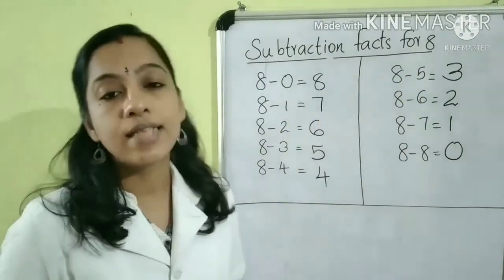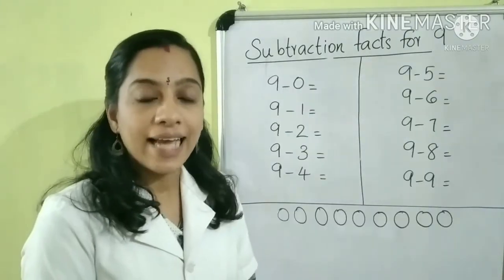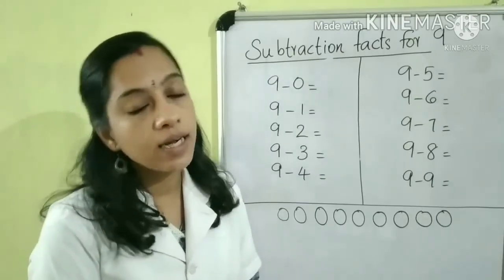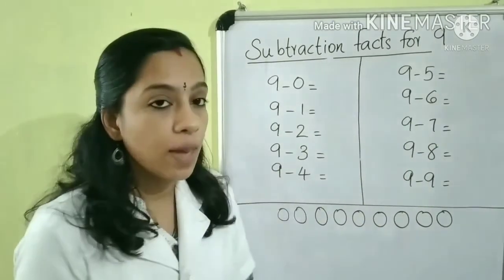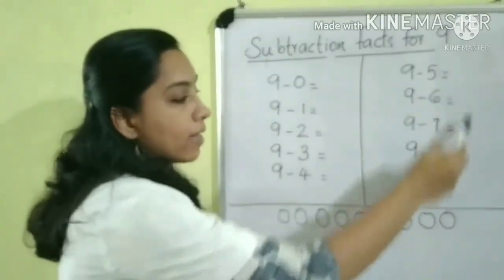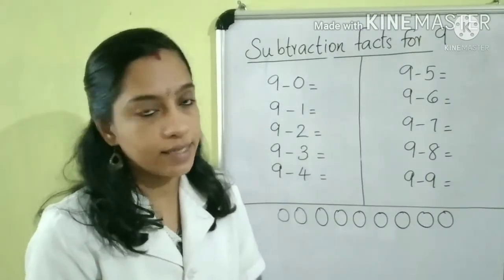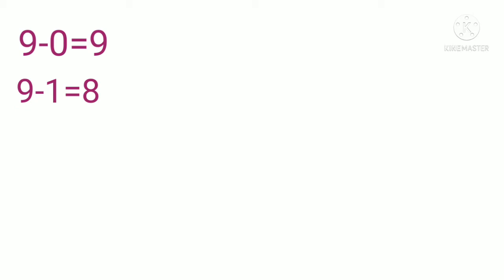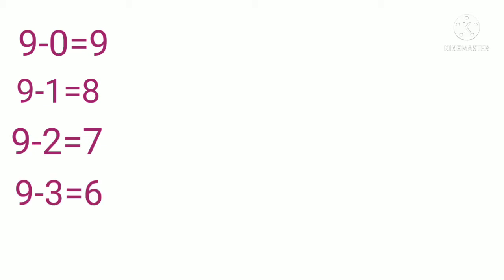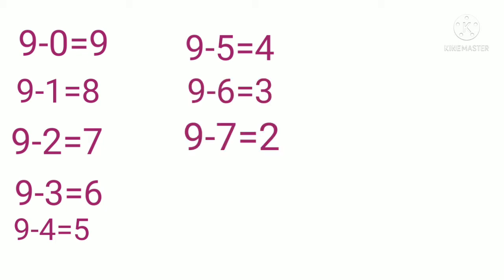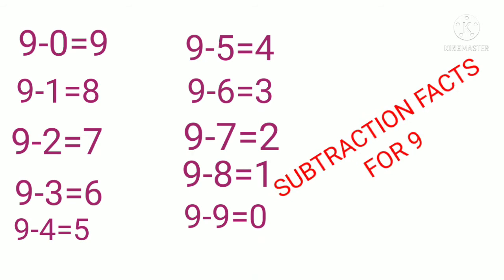The number 8 has 9 subtraction facts. Next, we are going to discuss the subtraction facts for the number 9. The subtraction facts for 9 are: 9 minus 0 is equal to 9; 9 minus 1 is equal to 8; 9 minus 2 is equal to 7; 9 minus 3 is equal to 6; 9 minus 4 is equal to 5; 9 minus 5 is equal to 4; 9 minus 6 is equal to 3; 9 minus 7 is equal to 2; 9 minus 8 is equal to 1; 9 minus 9 is equal to 0.